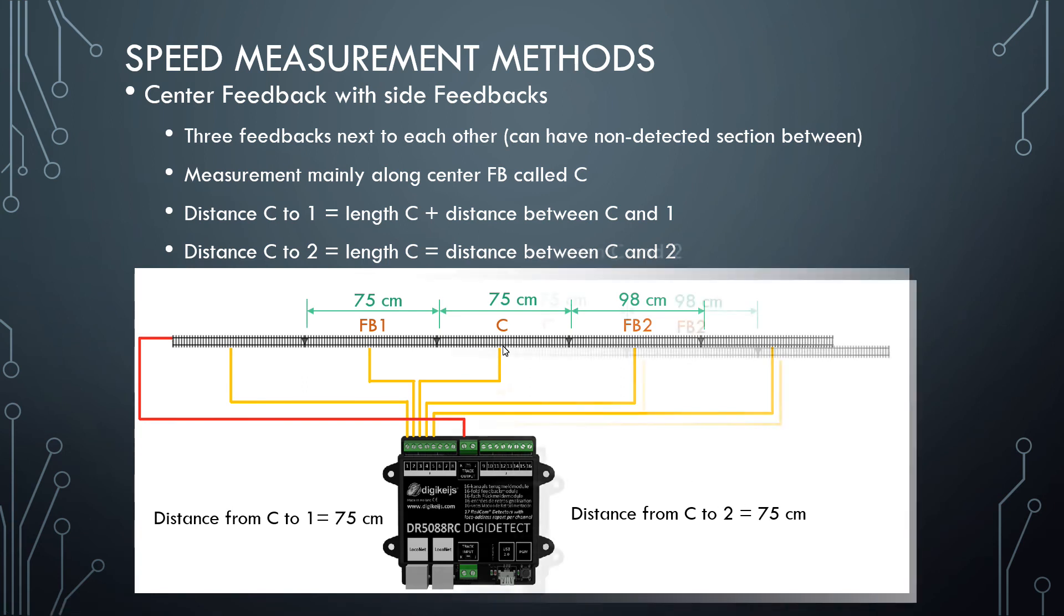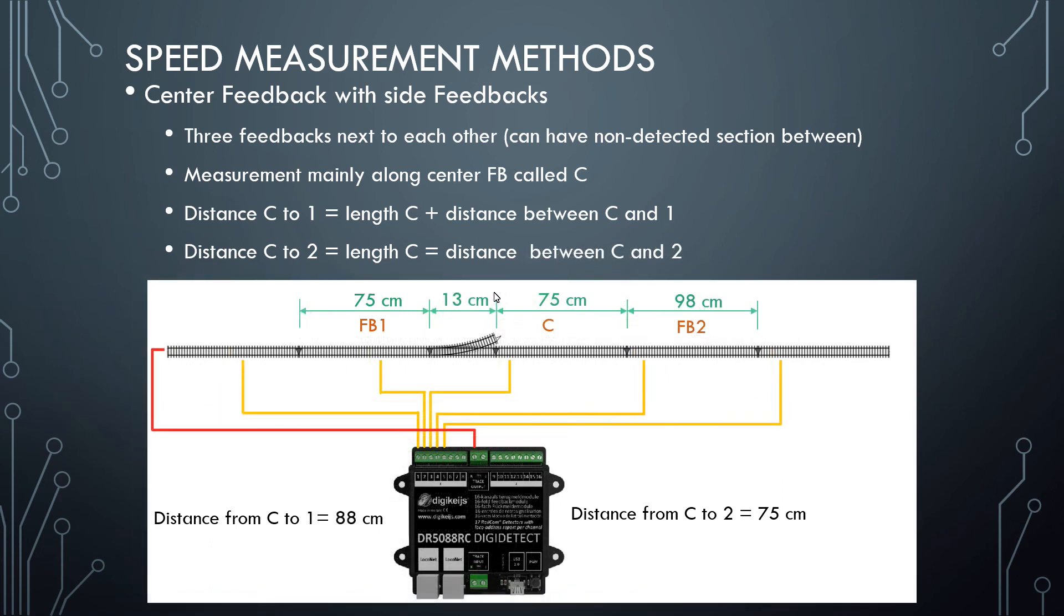And here we show another example where we do have a distance between two of the feedbacks here, between C and FB1. So here, the distance from C to one will be the length of C plus the distance between C and one. So it's 75 plus 13, 88 centimeters.